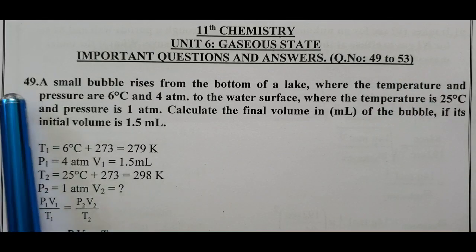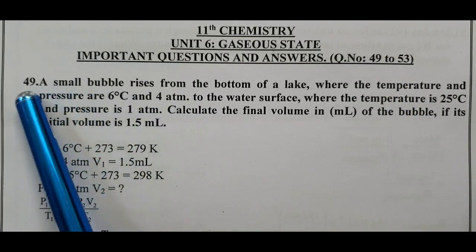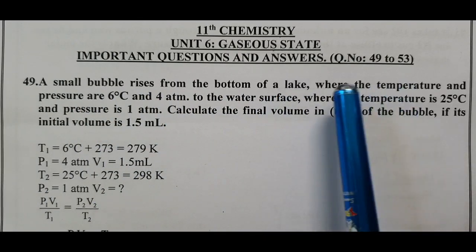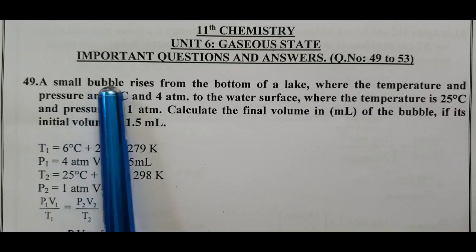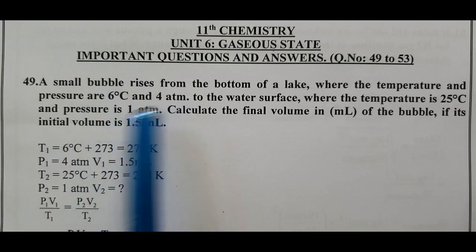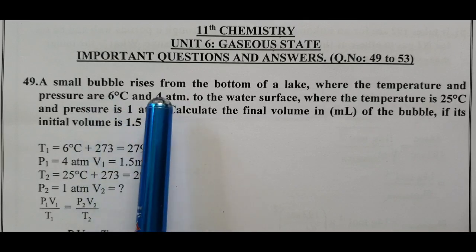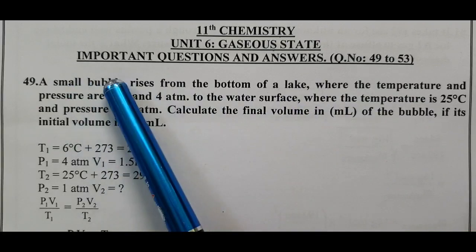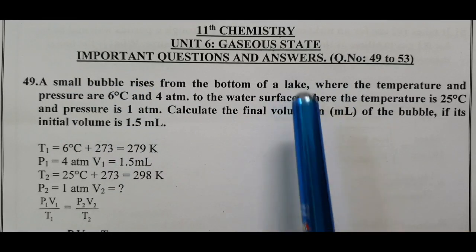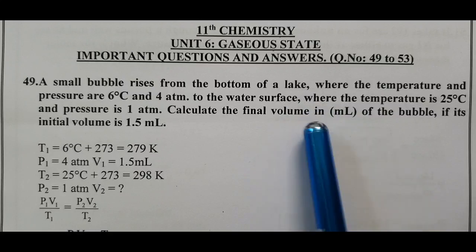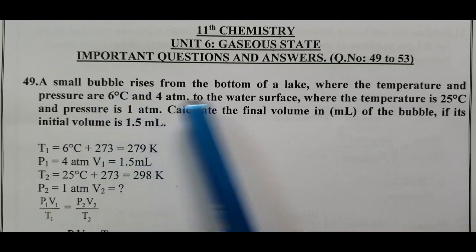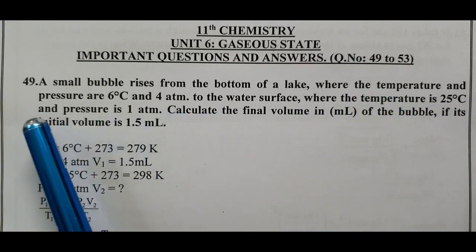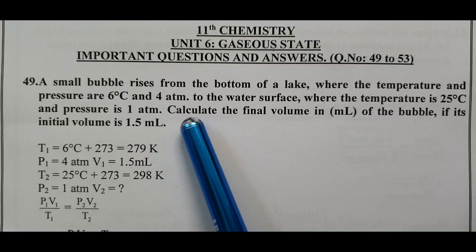Question Number 49: A small bubble rises from the bottom of the lake where the temperature and pressure are 6 degrees Celsius and 4 atm. T1 is the initial temperature, P1 is the initial pressure, to the water surface.